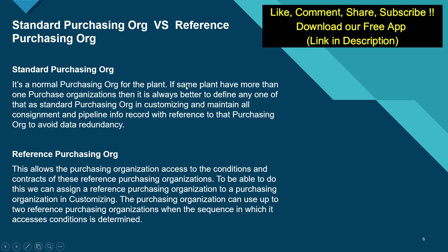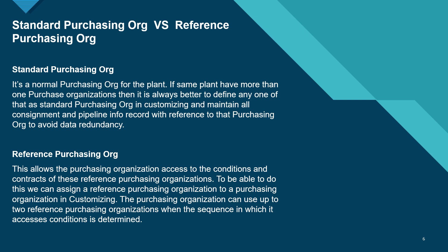A standard purchase organization is a normal purchase organization for a plant. A plant can have more than one purchase organization, but it is always better to define one as the standard — this can be done in customizing, and this purchase org can also be maintained for consignment and pipeline purchasing. A reference purchase organization allows a purchase organization to access the prices and conditions of the reference purchase organization. In customizing, a reference purchase organization can be assigned to a normal purchase organization, and each purchase organization can use up to two reference purchase organizations in sequence to determine access conditions.